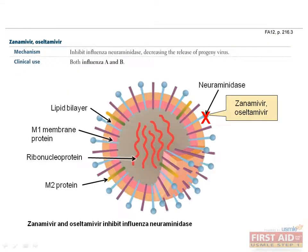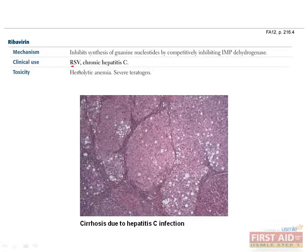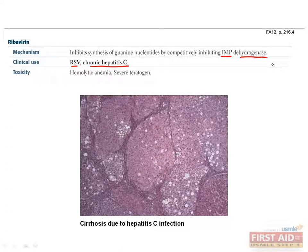Neuraminidase inhibitors work by inhibiting influenza neuraminidase, which decreases the release of progeny virus, and have utility against both influenza A and B. Ribavirin is used in the treatment of RSV and chronic hepatitis C infections. Ribavirin competitively inhibits IMP dehydrogenase, thus inhibiting synthesis of guanine nucleotides.